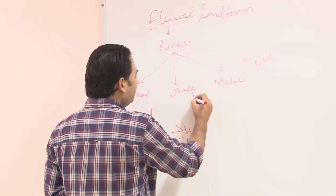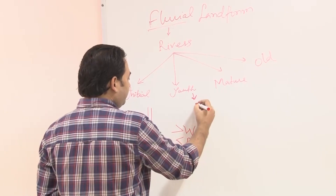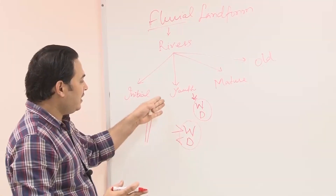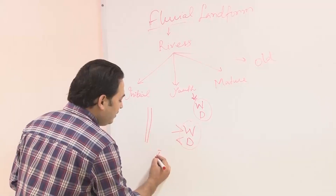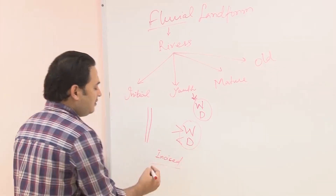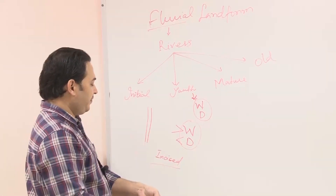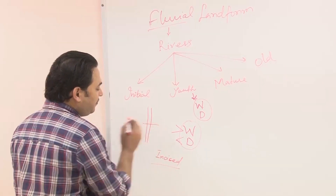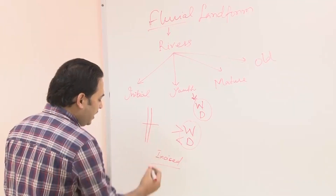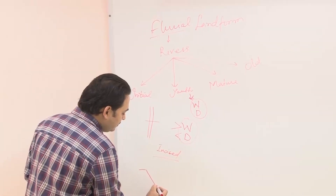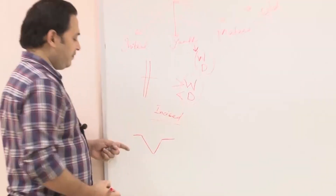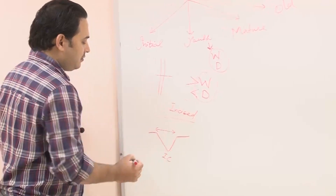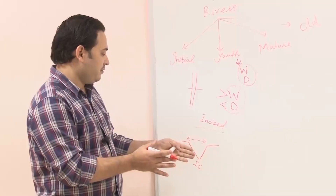In the youth stage, you will also find similar activity: narrow channels and incised or deep channels. Incised means the channel which does undercutting into the bedrock, causing the channel to become incised. If you take the cross-sectional profile of this straight channel, you will find a very incised channel with a narrow width.